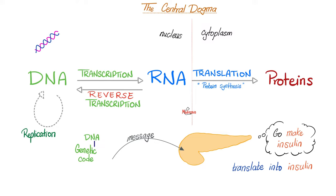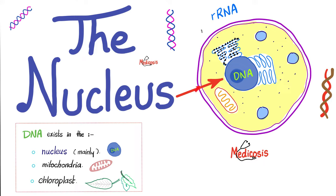Before RNA gets translated, it needs to exit the nucleus and go to the cytoplasm. DNA cannot exit the nucleus, because it would get degraded outside. RNA leaves because the ribosomes and endoplasmic reticulum are outside. DNA is mainly in the nucleus, but we also have some DNA in the mitochondria and, in plants, the chloroplast. You inherited mitochondrial DNA only from mommy — mnemonic: mitochondria is maternal.